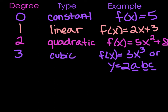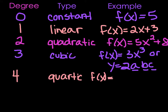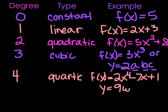After 3 comes 4. If something is to the fourth power, we call it quartic. For example, f of x equals 2x to the fourth minus 7x plus 1, as long as the highest power is 4. It doesn't just have to be x — we could have something like y equals 9wx squared y, because that has 4 variables in it, so that would still be considered quartic.